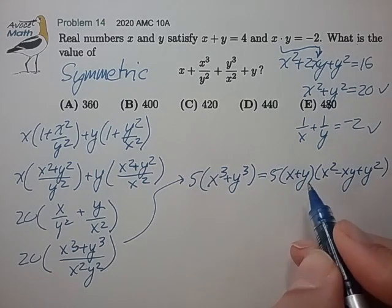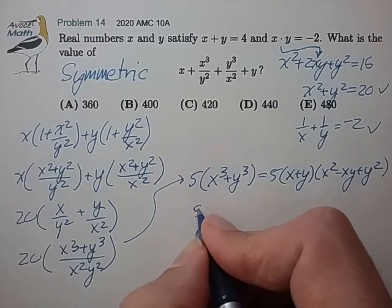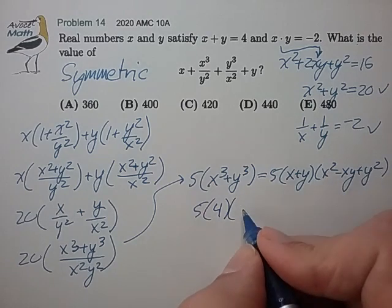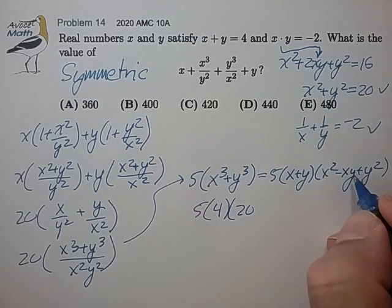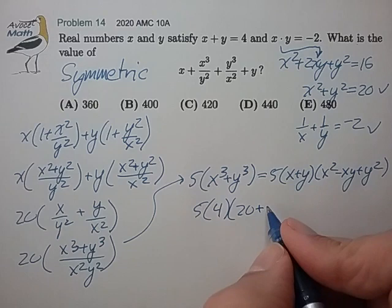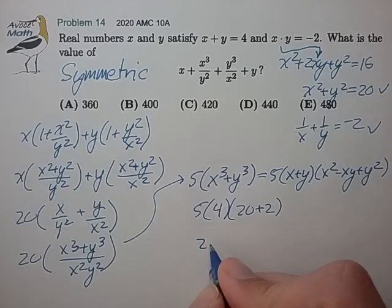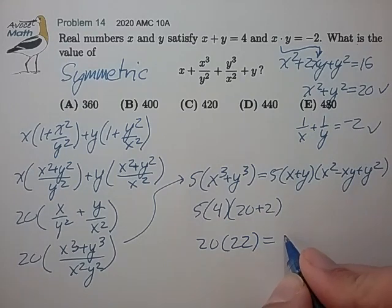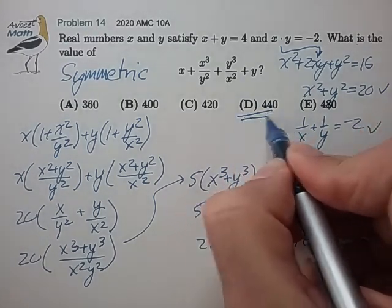Okay, I know all this information. I just need to substitute in. 5 x plus y is 4. x squared plus y squared is 20, minus x y is 2. So that's 20 times 22, and that's 440 for choice D.